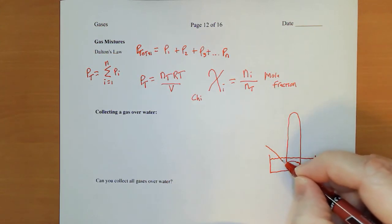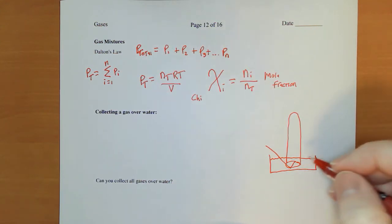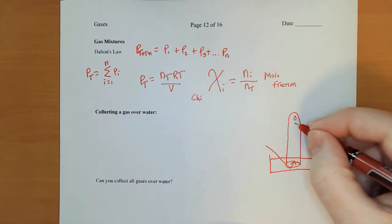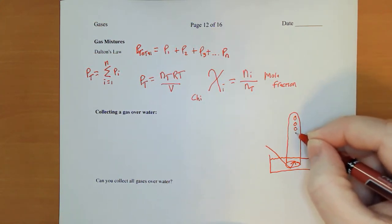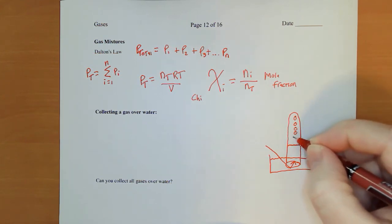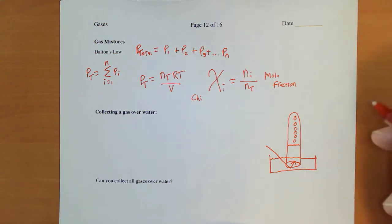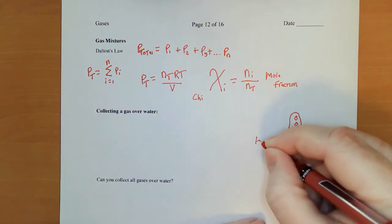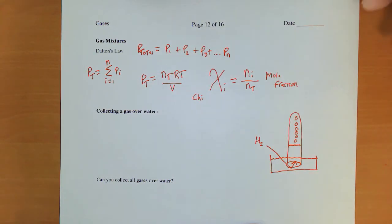Take a tube and stick it in there, some source of gas. You let it bubble through, and as it bubbles up there, it pushes the water level down really, really low.